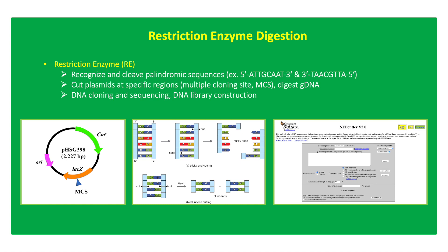RE digestion may produce DNA fragments with blunt ends (no overhang), characterized by DNA fragments that end with a base pair, or sticky ends (staggered cut), characterized by DNA fragments that end with a short nucleotide overhang. RE digestion uses commercially available restriction enzymes, which can be determined upon examining the sequence of the plasmid vector. Online bioinformatics pipelines are available to examine restriction enzyme sites and corresponding restriction enzymes to be used for DNA cloning.